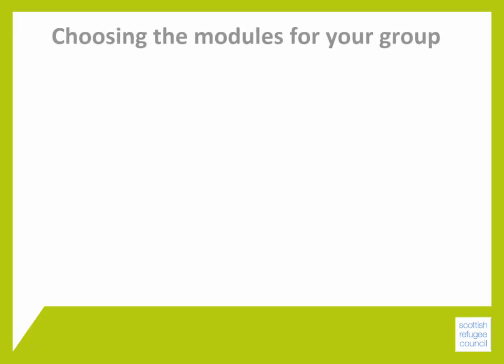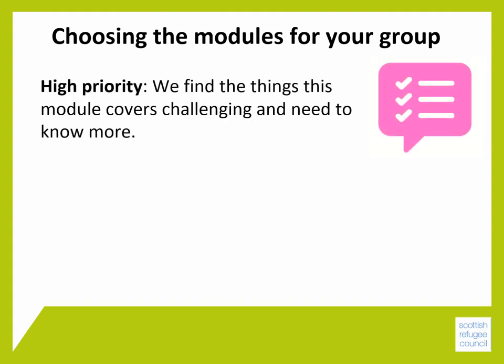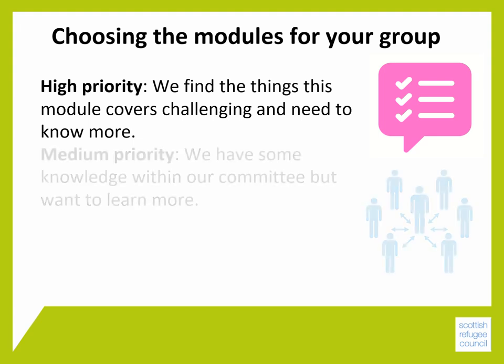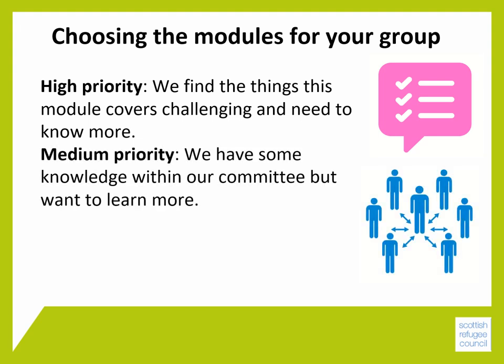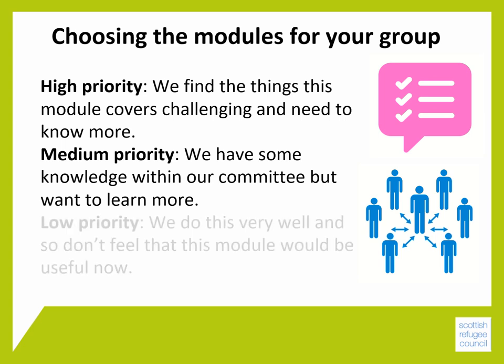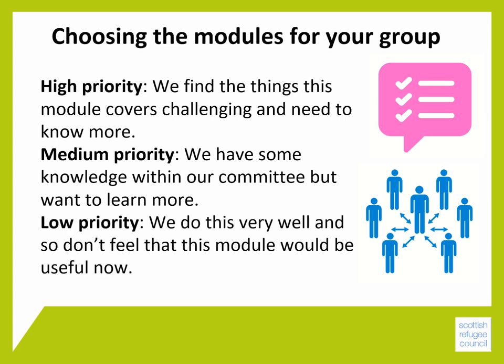To use the module guide, read through the information about each module one at a time and decide whether the module is high priority, medium priority, or low priority. High priority means you find the things this module covers challenging and you need to know more. Medium priority means you have some knowledge within your committee but want to learn more. Low priority means you do this very well and don't feel the module would be useful now.